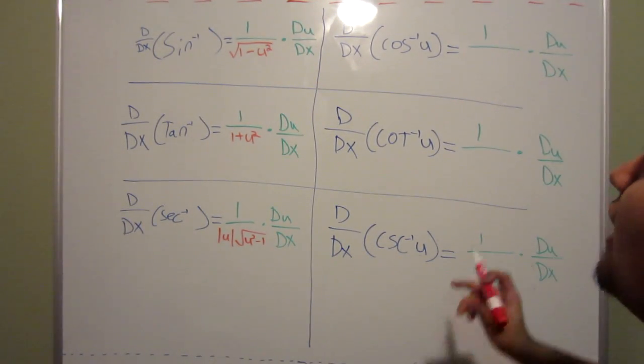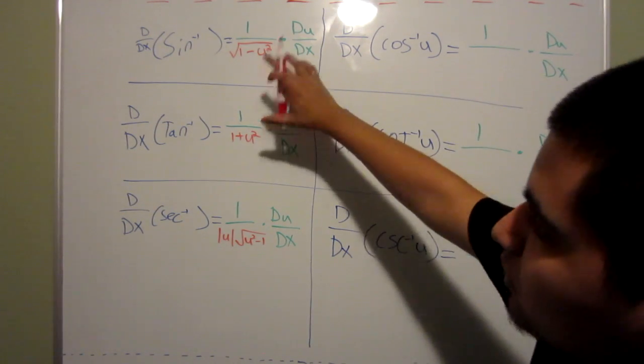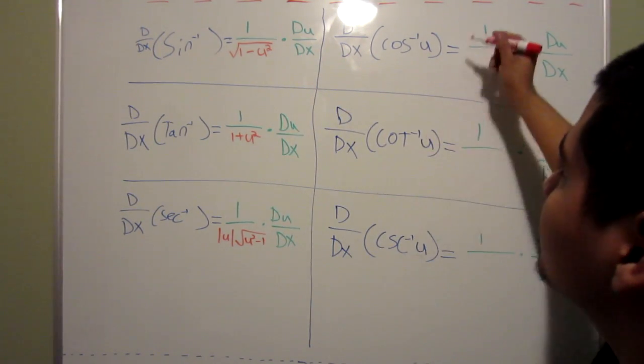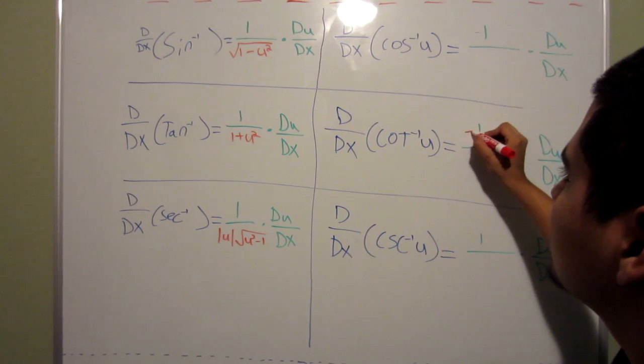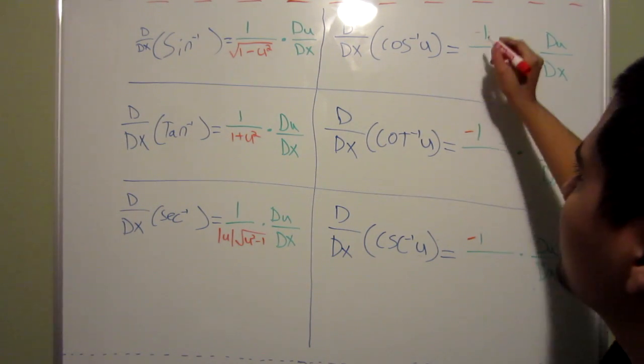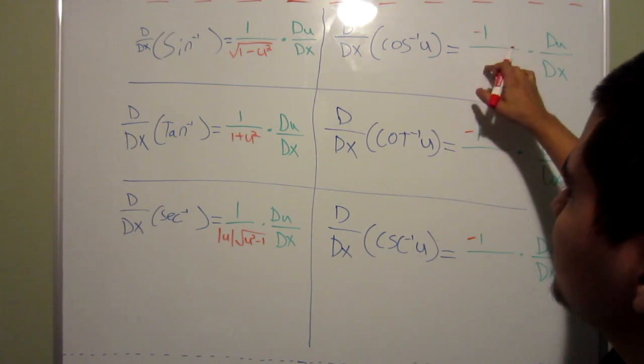But instead of going from top to bottom, you go from left to right, top to bottom. And the only difference between the left side and the right side is that it's negative.